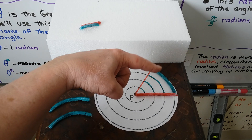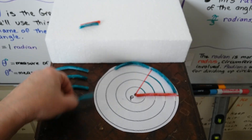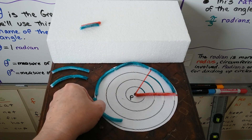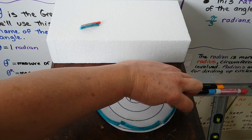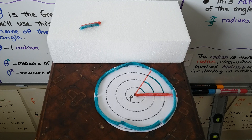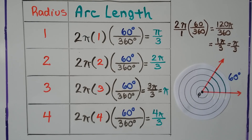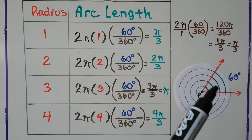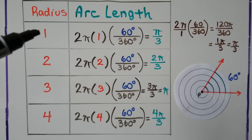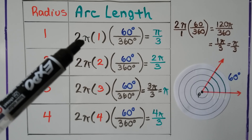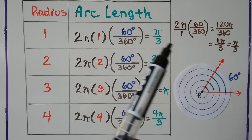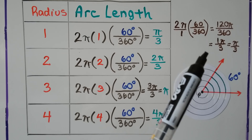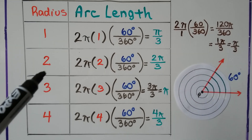If we took six of these arcs and laid them around this circle, it would be the circumference of the circle. Looking at the diagram, we can see the central angle is 60 degrees. For radius 1, our arc length will be 2 × π × 1 × (60° / 360°), which gives us π/3. We get 120π/360, which comes out to π/3. For radius 2, we multiply by 2, and our arc length will be 2π/3.